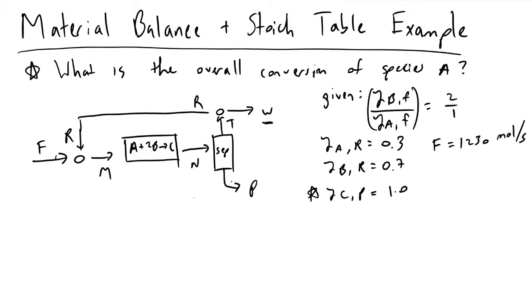The other key parameters we are given: in addition to our product stream being pure product C, we know that our recycle stream has a 0.3 ratio — so a 30% composition of species A and a 70% composition of species B. Finally, we are told that our feed flow rate is 1230 moles per second entering the process.